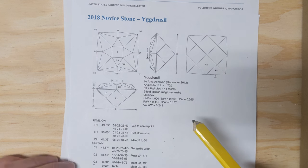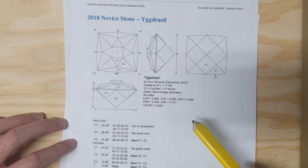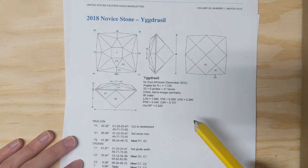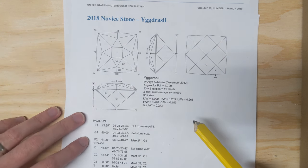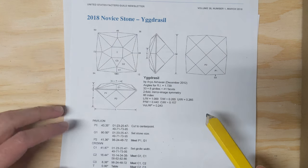Since I've cut a few stones on the channel now, I thought today it might be nice to go through an actual faceting diagram and run through what the different areas mean and how to interpret it.